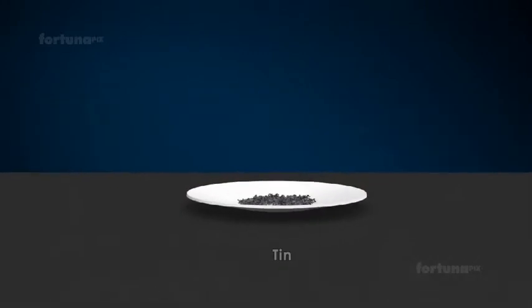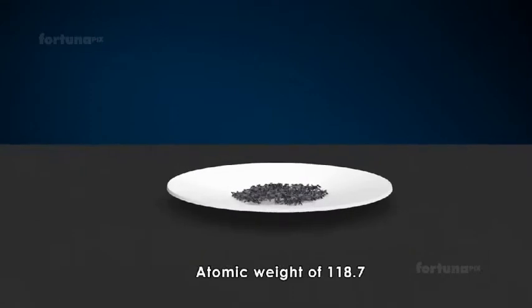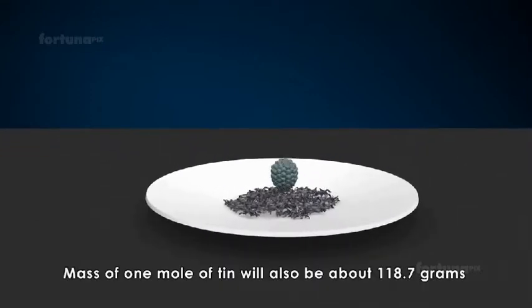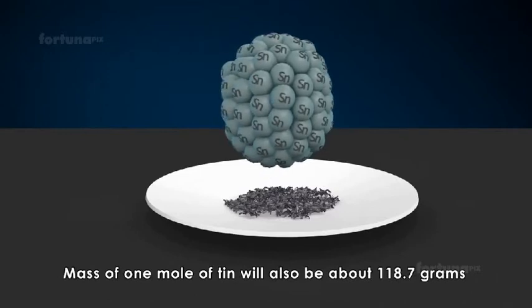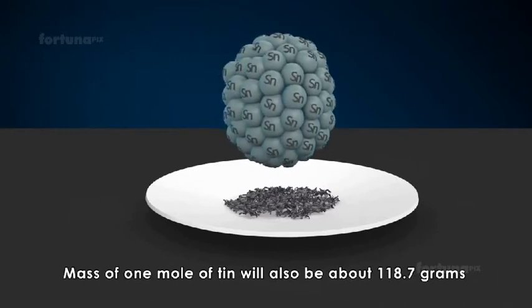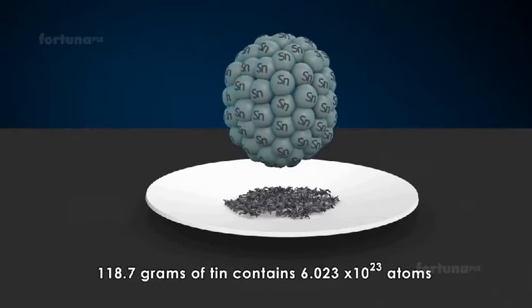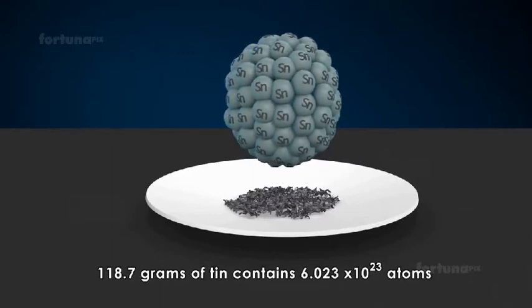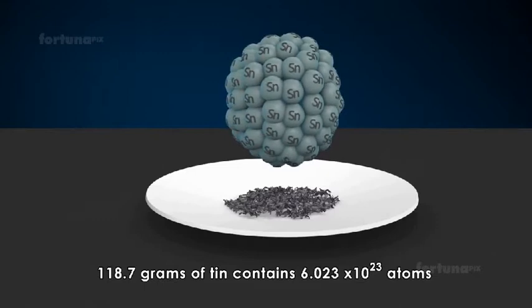Let's look at tin, which has an atomic weight of 118.7. The mass of one mole of tin will also be about 118.7 grams, implying that 118.7 grams of tin contains 6.023 × 10²³ atoms.